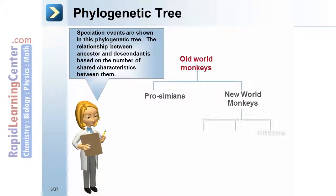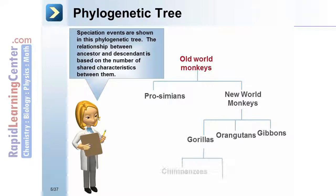The New World monkeys gave rise to the gibbons, the orangutans, and gorillas. The gorillas gave rise to the chimpanzees and humans.